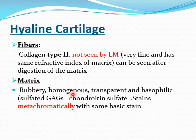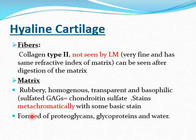The matrix is rubbery and homogenous, and it is basophilic because it contains sulfated GAGs (glycosaminoglycans), specifically chondroitin sulfate. With basic stains, it shows metachromatic staining — meaning the stain reacts with the matrix and produces a new color. The matrix is formed of proteoglycans, glycoproteins, and water. Proteoglycans and glycoproteins are combinations of carbohydrates and protein in different ratios.